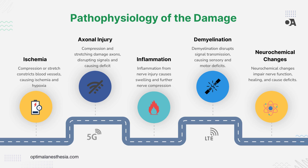Let's talk about inflammation. When a nerve gets injured, your body's immune system springs into action, sending inflammatory cells to the injured area to start the healing process. However, these cells release substances that can cause swelling, which might further compress the nerve — like having a balloon in a tight space, it gets squeezed even more. Inflammation can also break down the protective barrier around the nerve, allowing more inflammatory cells to invade and potentially prolong the injury.